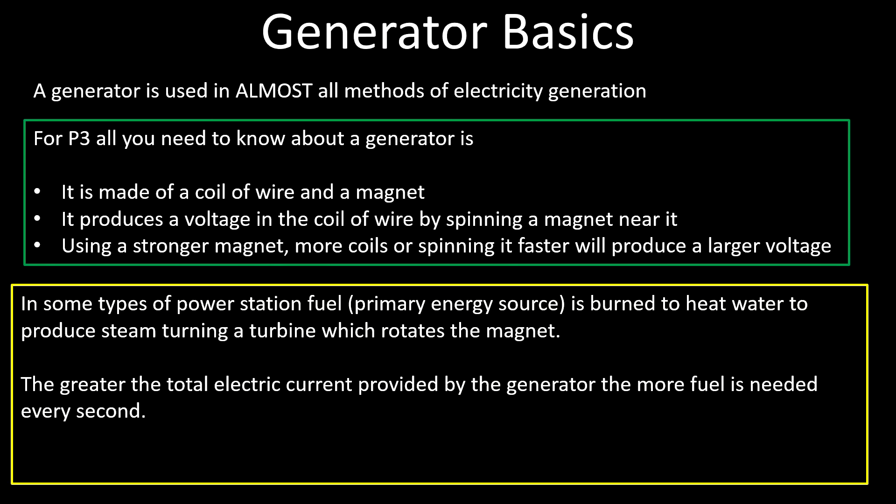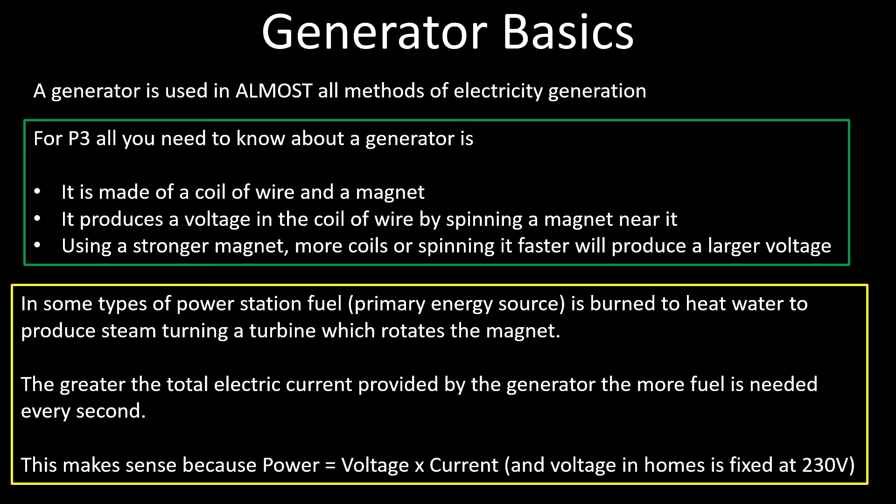The greater the current, unsurprisingly, the more fuel is needed every second. That makes sense because basically what we're doing by increasing the current is increasing the power produced by the generator. Voltage is fixed at 230V if we're talking about use in the home, and so higher current means higher power, higher power means you're going to need to release more energy every second, so you're going to need to burn more fuel every second. That means there's a direct link between using electricity in your home and the amount of fuel burned in a power station.